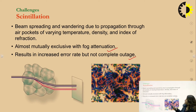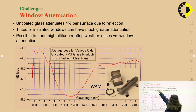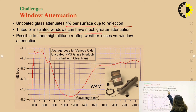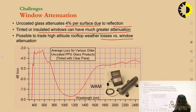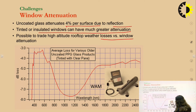The next challenge is window attenuation. Uncoated glass attenuates at least four percent per surface due to reflection, while tinted or insulated windows can have much greater attenuation. It is possible to trade high-altitude rooftop weather losses versus window attenuation. A graph of wavelength versus attenuation in dB shows that at lower wavelengths we have higher attenuation, and at larger wavelengths — around 1000 to 1310 nanometers — we have very low attenuation and less loss.